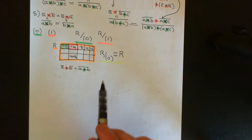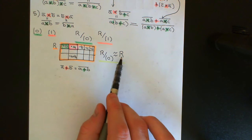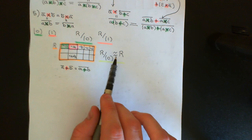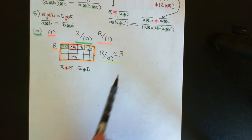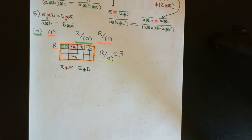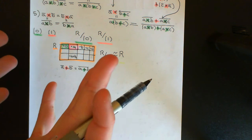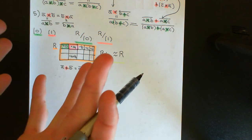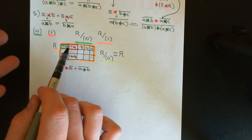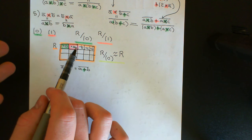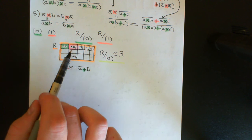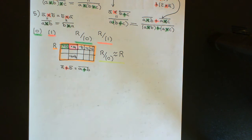So either you can say it's equal to the initial ring R or it's isomorphic to the ring R. It's certainly isomorphic. The isomorphism is so obvious — you're just sending each element to the coset that contains it — that you would get away with saying that they're equal to one another.